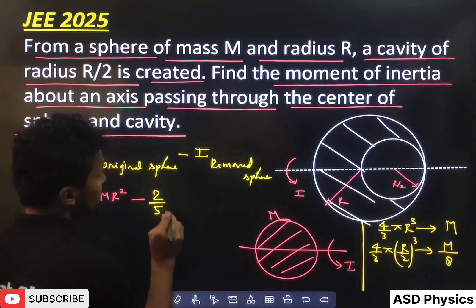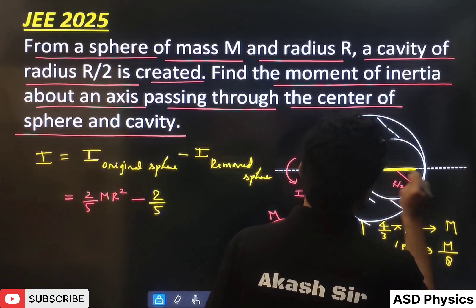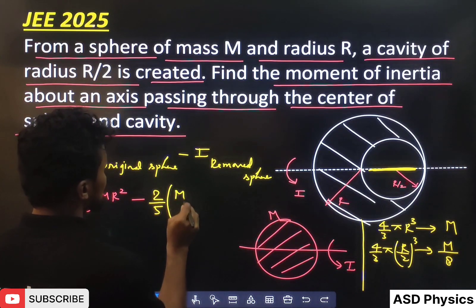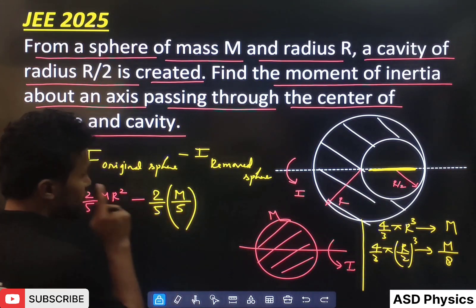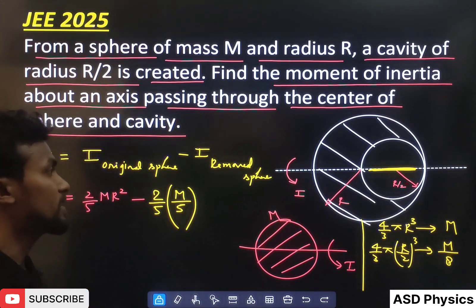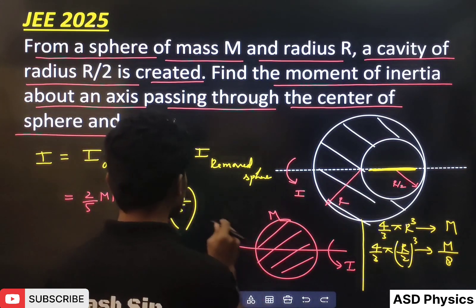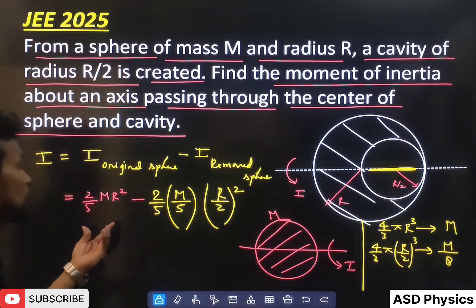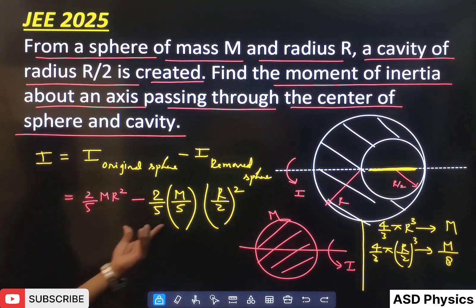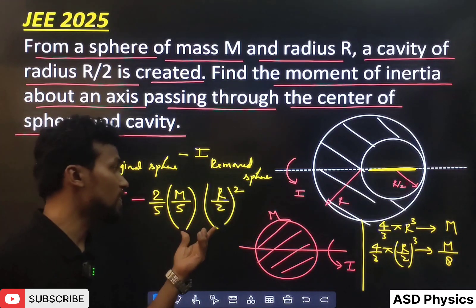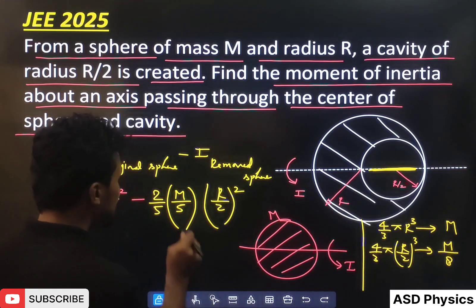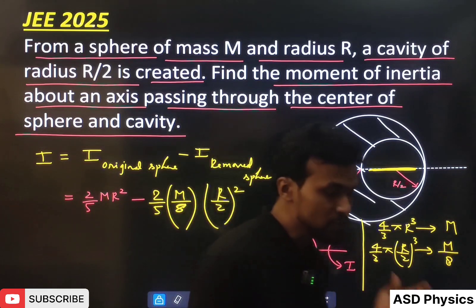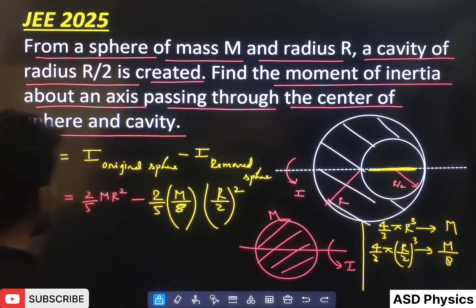So we subtract 2/5 — about the same axis, since the axis is not changing — minus 2/5 times the mass of the removed sphere, which is M/8, times the radius of the removed sphere (R/2)², giving us: 2/5 MR² minus 2/5 × (M/8) × (R/2)².